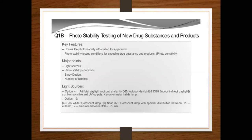Key topics include light sources, photostability conditions, study design, and number of batches. For light sources, there are two options: Option 1 is artificial daylight combining visible and UV outputs, using xenon or metal halide lamps. Option 2 uses two sub-options — A: cool white fluorescent lamp, and B: near UV fluorescent lamp with spectral distribution between 320 and 400 nanometers.